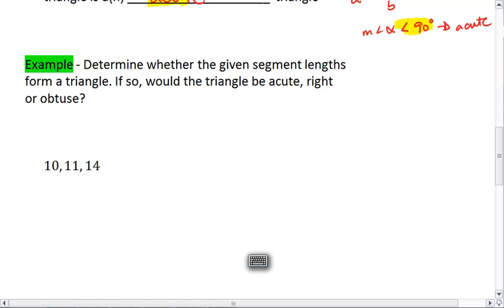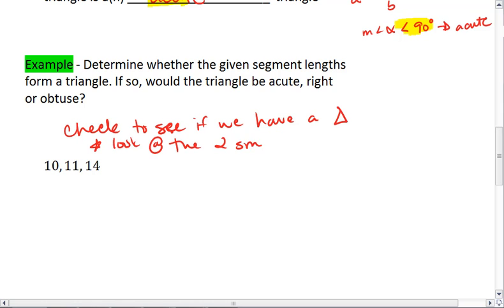First thing first, we want to check to see if we have a triangle. The way we do that is we want to look at the two smallest sides.